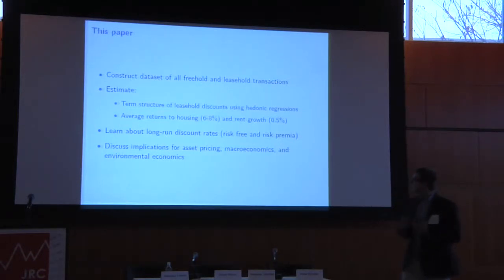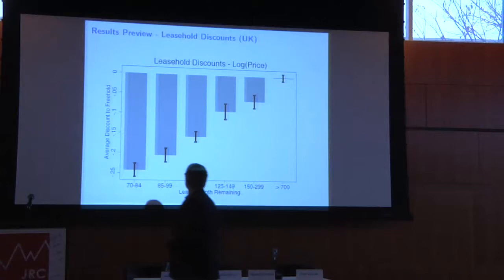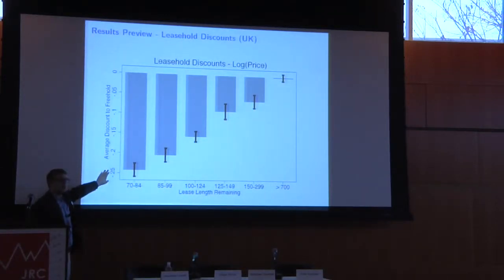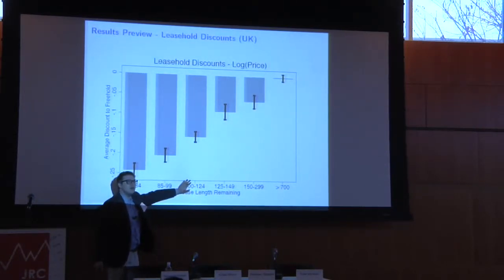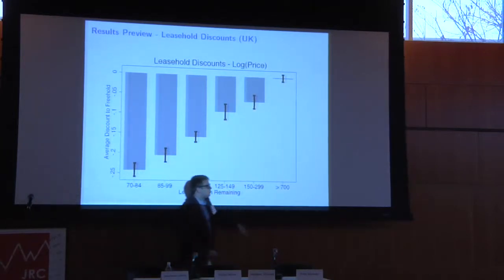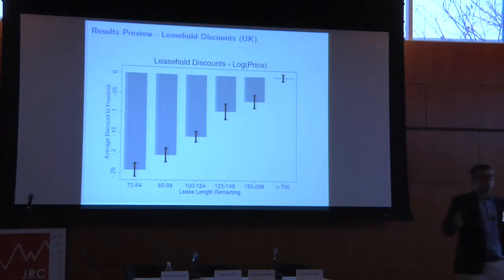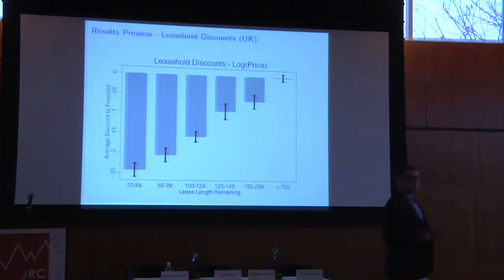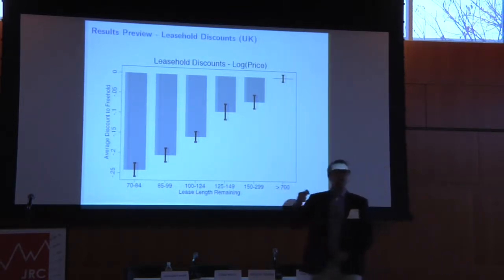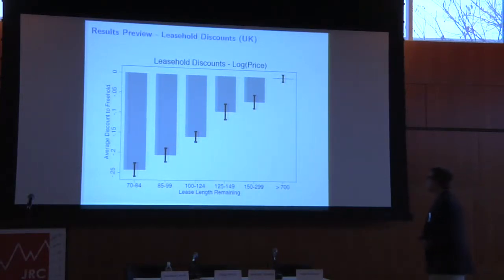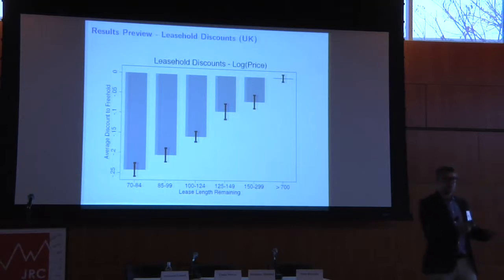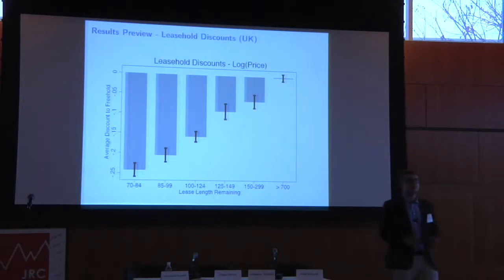Finally, we discuss implications for asset pricing, macroeconomics, and environmental economics. Here is the punchline: this graph shows the price discount between a leasehold of a given remaining duration and an otherwise identical freehold. For a 100-to-125-year remaining lease, properties trade at about a 15% discount to an otherwise identical freehold. Remember, the basic Gordon growth formula suggested this should be less than a percentage point. Yet in the data, people are assigning quite a large value to rents that only come 100 or 120 years into the future. Importantly, for the 700-year-plus end of the term structure, there is essentially no discount between freehold and leasehold prices.